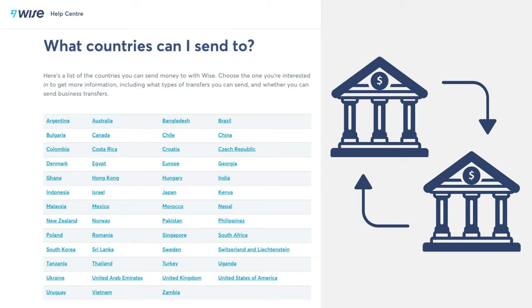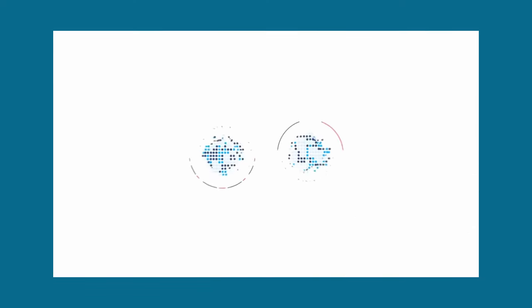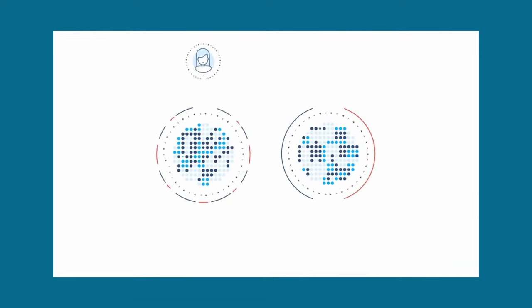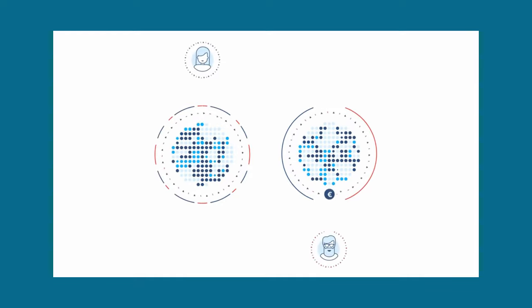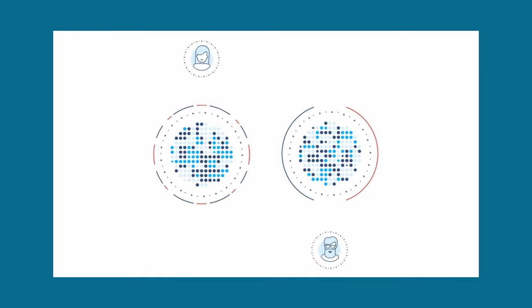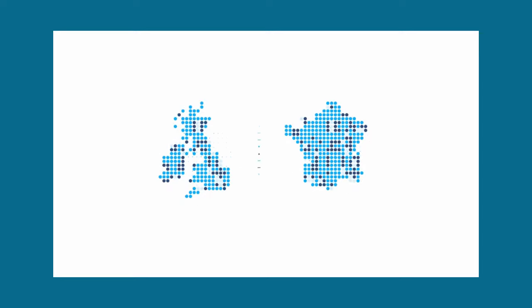WISE has its own bank accounts in more than 50 countries worldwide in the local currency, so they don't have to convert one currency to another and they don't have to transfer money across borders. This means that WISE keeps its costs low and passes on the savings to you. For example, if you want to send pounds to France, simply log on and pay in your pounds to WISE's UK account, then WISE's French account sends euros to the recipient. The money never actually crosses any borders.